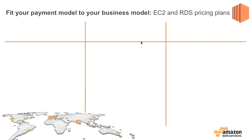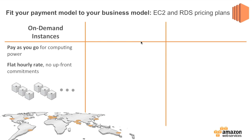So you've started to right-size your application, and then you've right-sized your EC2 and RDS instances to what you need. The next step is thinking about what business model suits that application. The most commonly used — and I'm sure you've probably all heard of this — is on-demand instances.